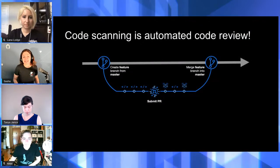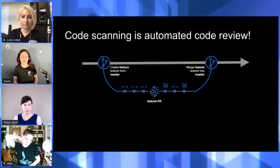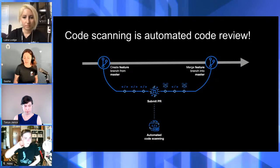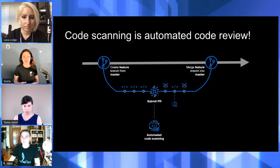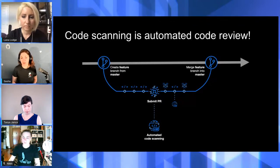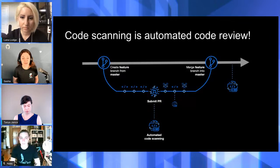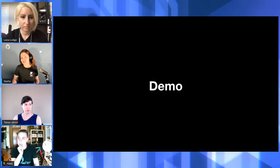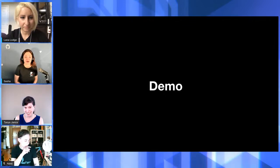Code scanning essentially aims to automate the code review as part of your pull request flow. You can run it every time you submit a pull request, on every subsequent commit, and also run it on master periodically — for example, if a new vulnerability came out and there's now a query to identify it.